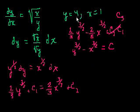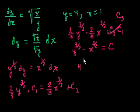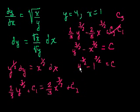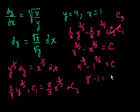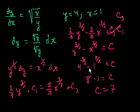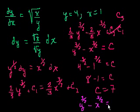Now let's use our initial conditions — y equals 4 when x equals 1. So 4 to the 3/2 minus 1 to the 3/2 equals c. What's 4 to the 3/2? 4 to the 1/2 is 2, then to the 3rd power is 8. And 1 to the 3/2 is just 1. So 8 minus 1 equals c, and c is equal to 7. Therefore, the particular solution to this differential equation is y to the 3/2 minus x to the 3/2 equals 7.